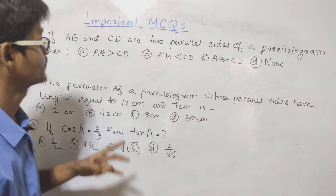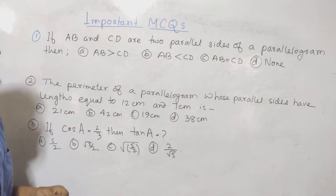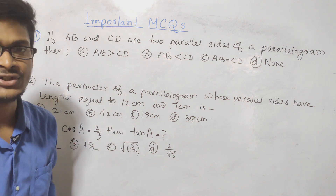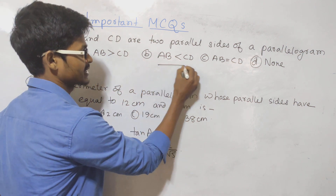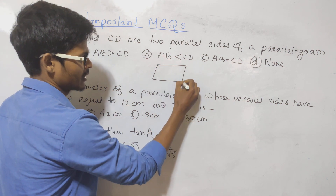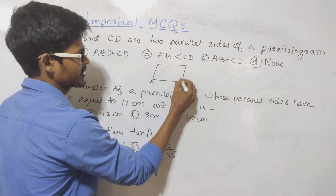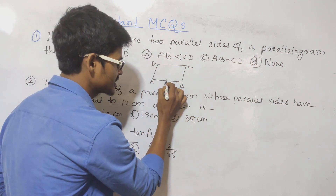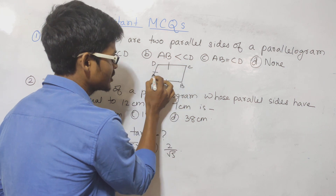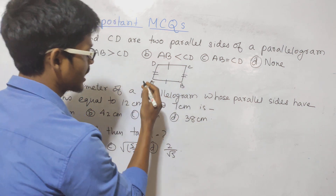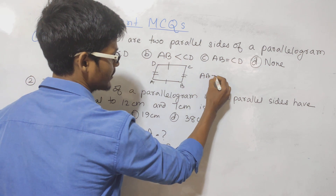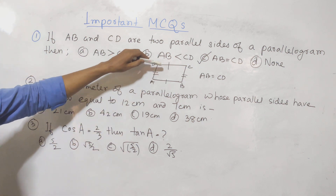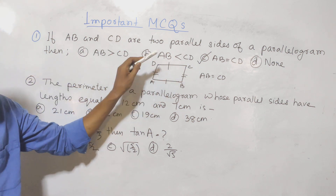So the first question is: if AB and CD are two parallel sides of a parallelogram, then is AB less than CD or AB equal to CD? So we have a parallelogram with sides AB and CD. The opposite sides of a parallelogram are parallel and equal. So the condition is AB equal to CD. The answer is option C — the opposite sides are equal and parallel.